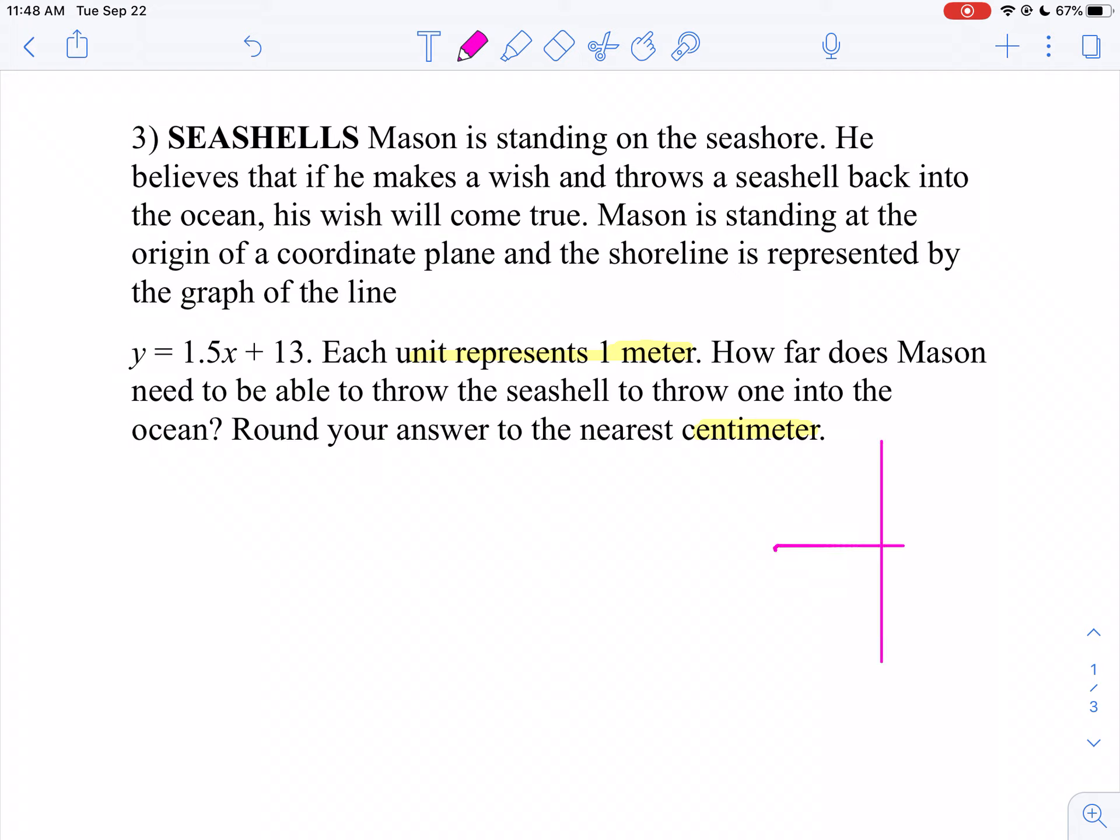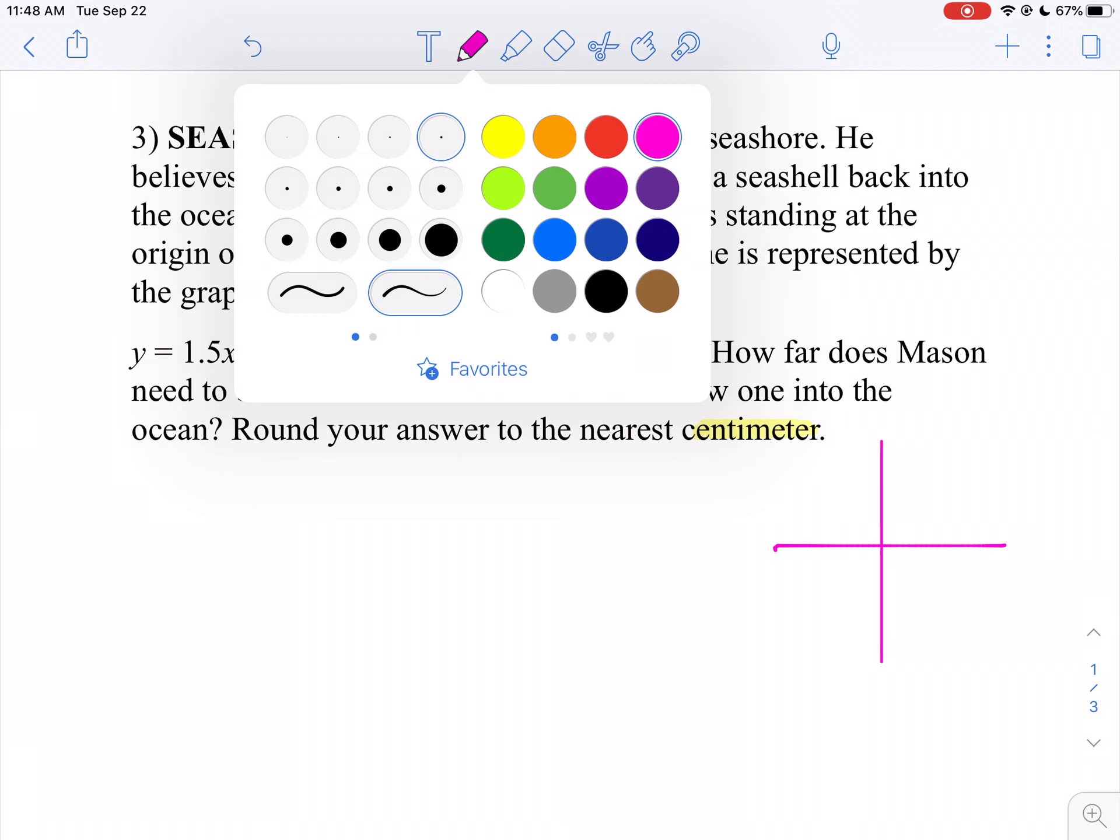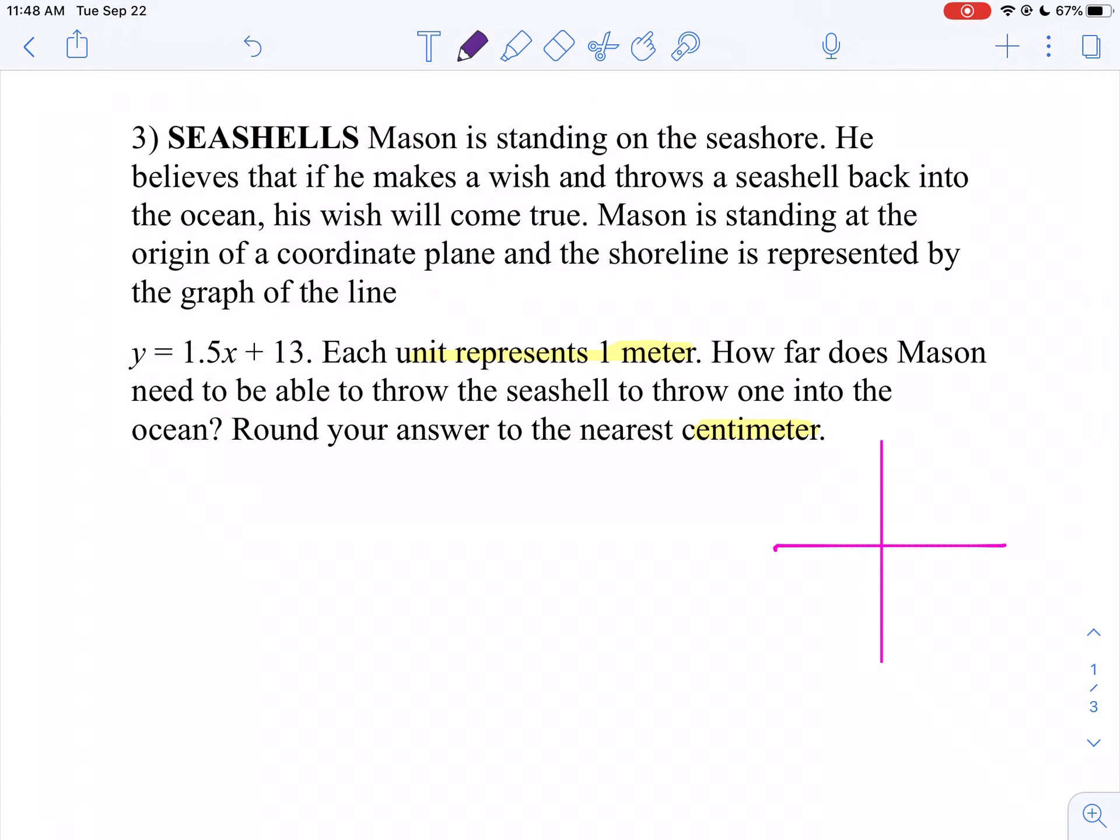Mason is standing right here at the origin. And we have 13 units up. We've got this line and it has a slope of 1.5. So that means he goes up one and a half and over one. So our line looks something like this. And once again, it's not to scale.